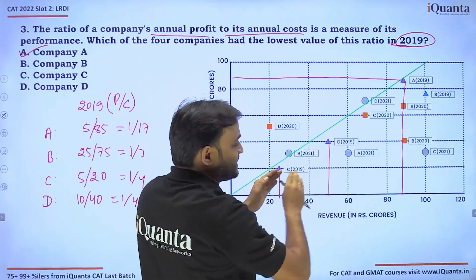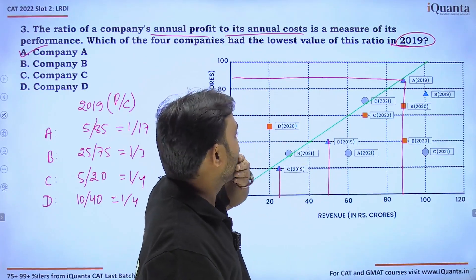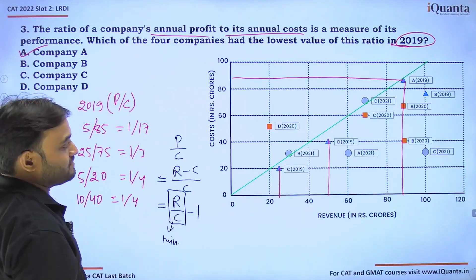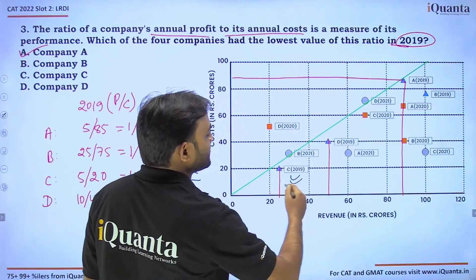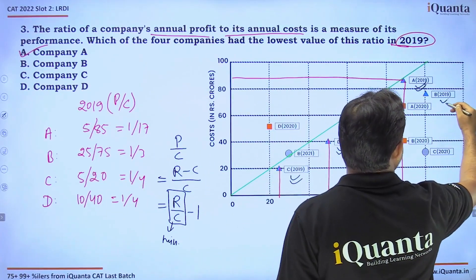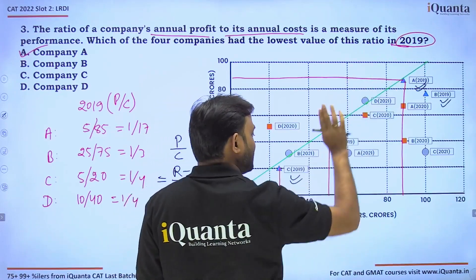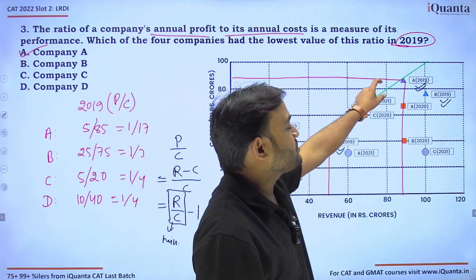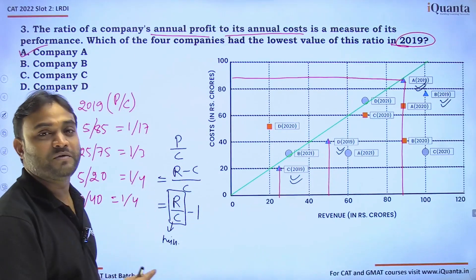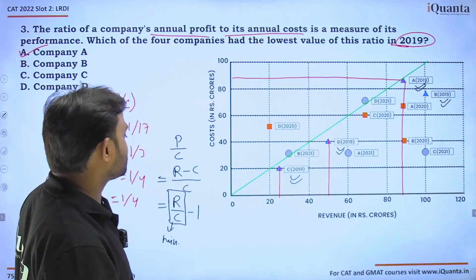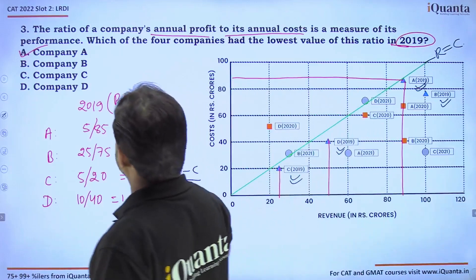Going right of the R=C line means revenue increases and cost decreases; going above means revenue decreases and cost increases. To get the minimum value of R/C, we look for the closest value to the line. C 2019, D 2019, and B 2019 all have R/C greater than A 2019, because A lies on the line where R almost equals C — and in that case R/C is minimum. This confirms the answer quickly.